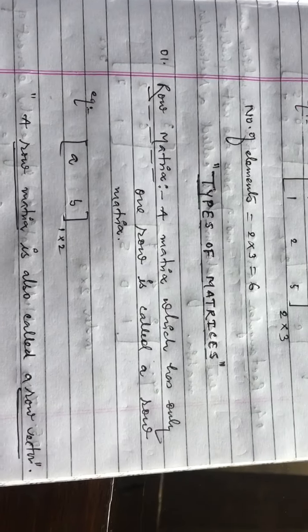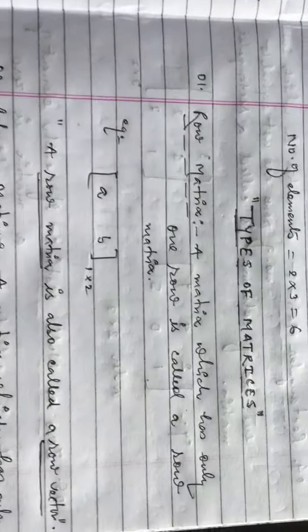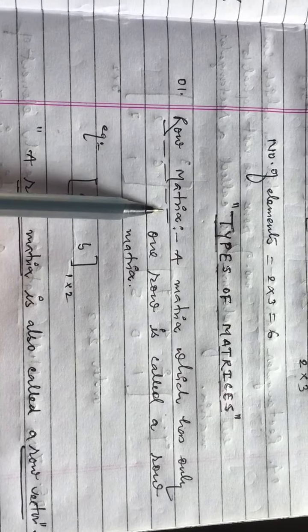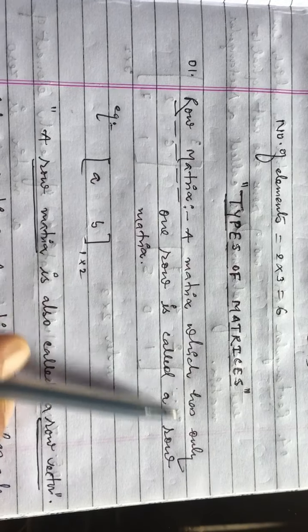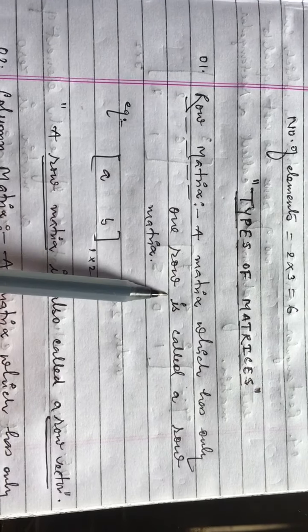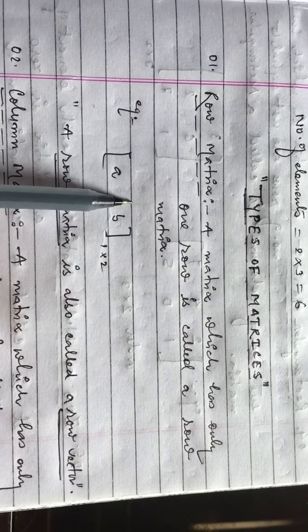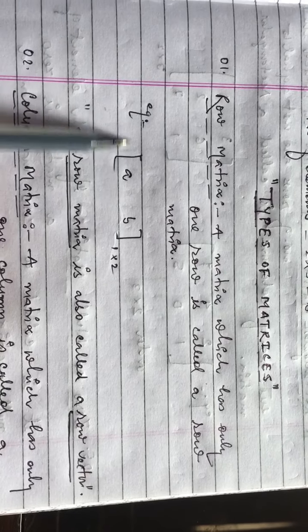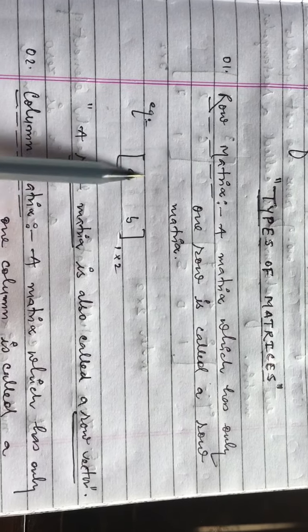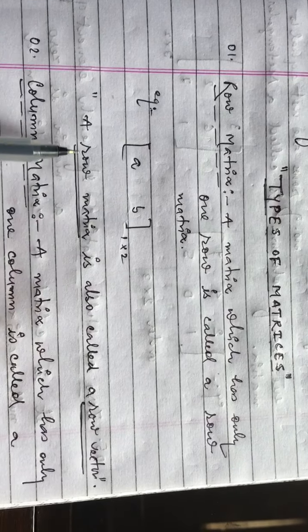Types of matrices — first, the row matrix: A matrix which has only one row is called a row matrix. For example, [a b] has order one by two — one row and two columns. A row matrix is also called a row vector.